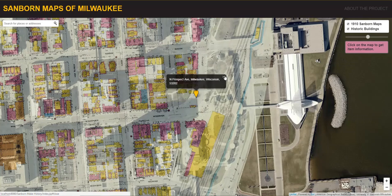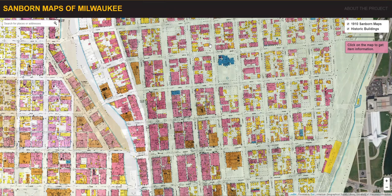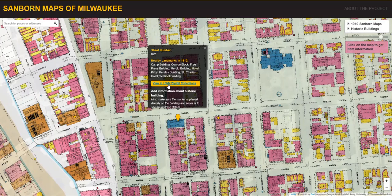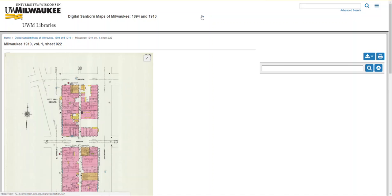A key component of our application is the ability to interact with the Sanborn maps. Users can click a point on the map to see nearby landmarks that existed near that area in 1910 and access a link to view the collection in the University of Wisconsin-Milwaukee's digital map library.